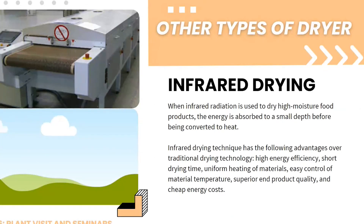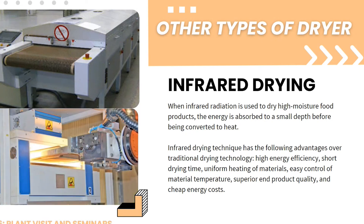When infrared radiation is used to dry high-moisture food products, the energy is absorbed to a small depth before being converted to heat. Infrared rays penetrate the raw material and act on it at a molecular level, allowing for high-quality processing and increasing the shelf life of products without preservatives. The advantages of infrared drying over traditional drying technology include high energy efficiency, short drying time, uniform heating of materials, easy control of material temperature, superior end product quality, and cheap energy costs.